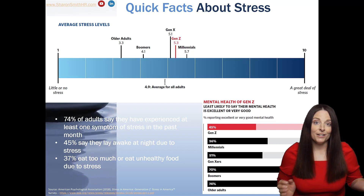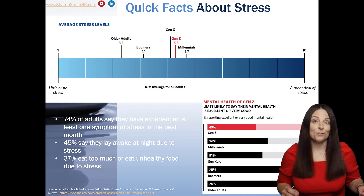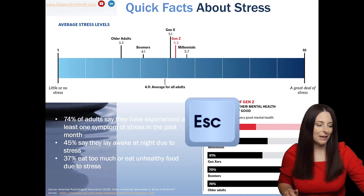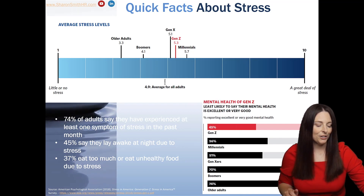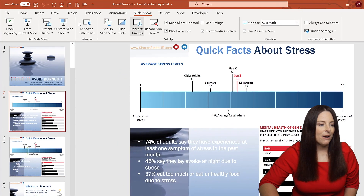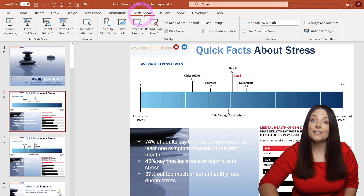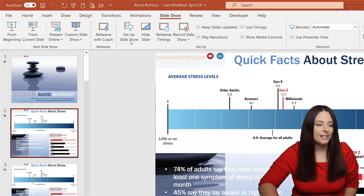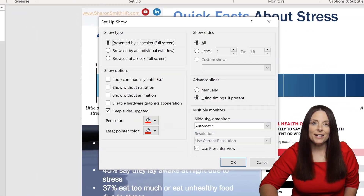Now to change the color — it defaults to red, but I can also change it to blue or green. All I have to do is click escape to come out of presentation mode and go back into my PowerPoint, come up to the ribbon, and click on the slideshow ribbon. Under setup, you'll see the setup slideshow button.